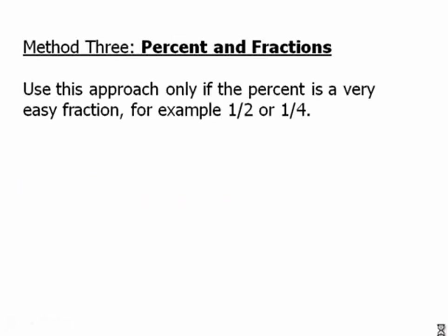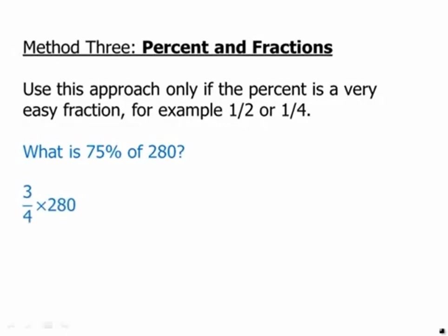Finally, percents and fractions. Use this approach only if the percent is a very easy fraction — for example, one-half or one-quarter. So if it's a very easy fraction, sometimes it's easier to change things to a fraction. We get the question: what is seventy-five percent of two hundred and eighty? It's much easier to remember seventy-five percent is three-quarters. What's three-quarters of two eighty? Cancel the fours, we get three times seventy, which is two hundred and ten.